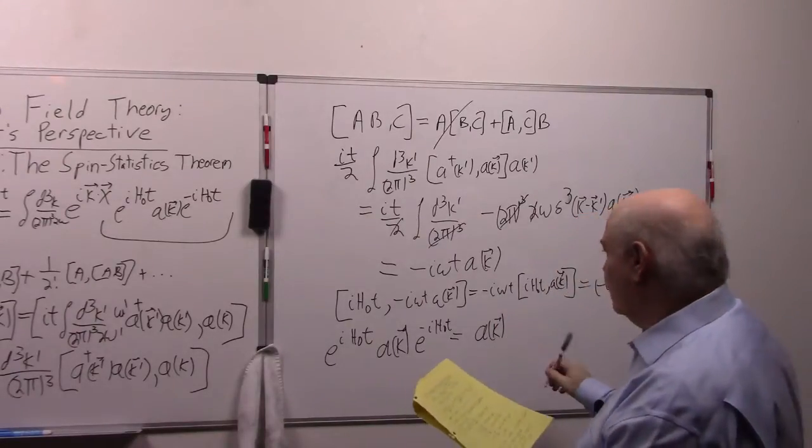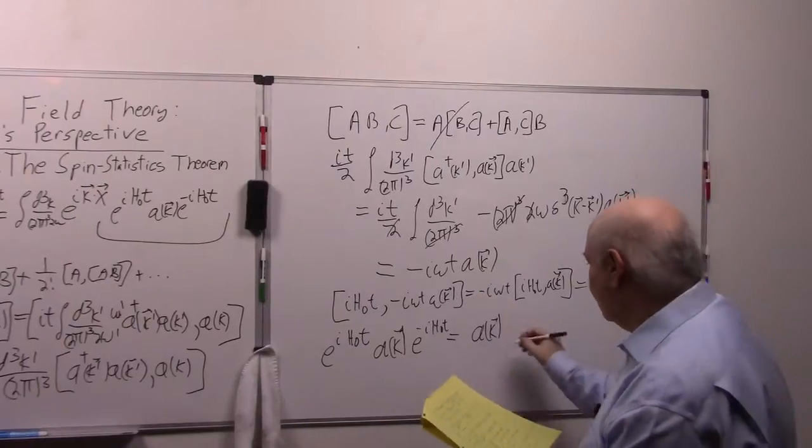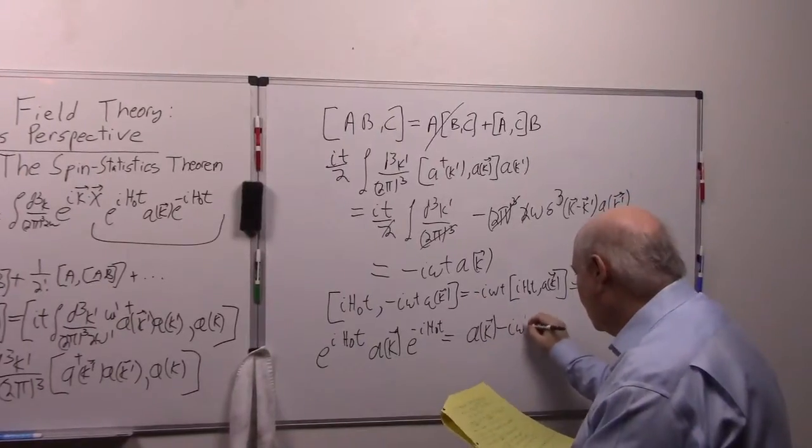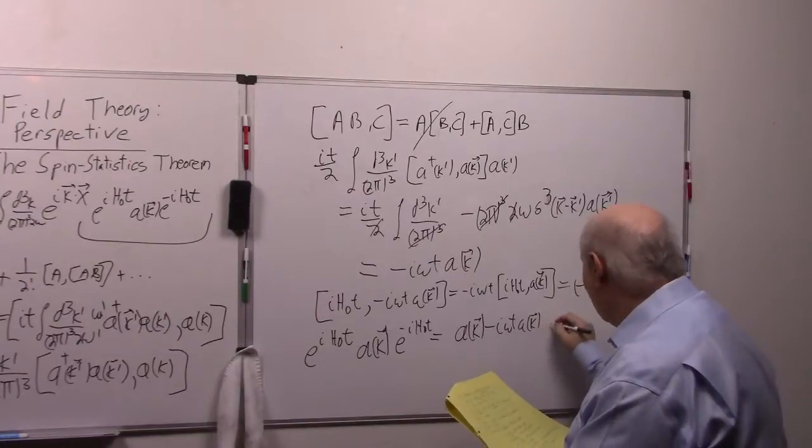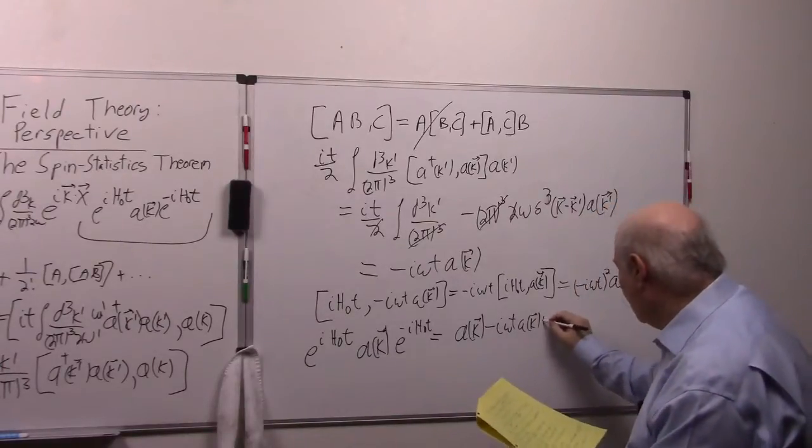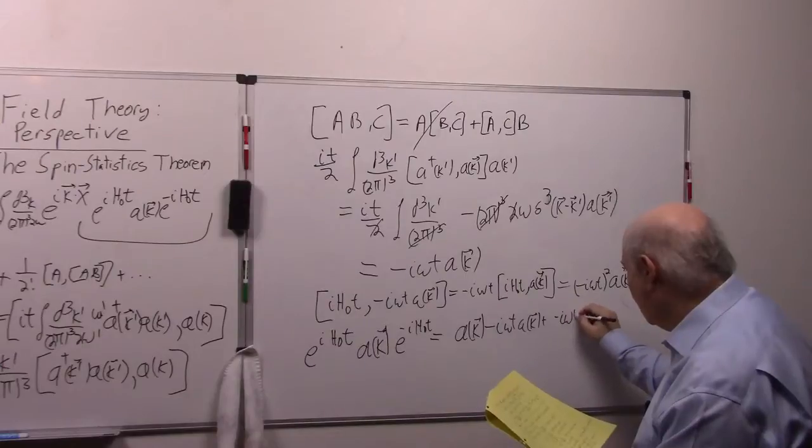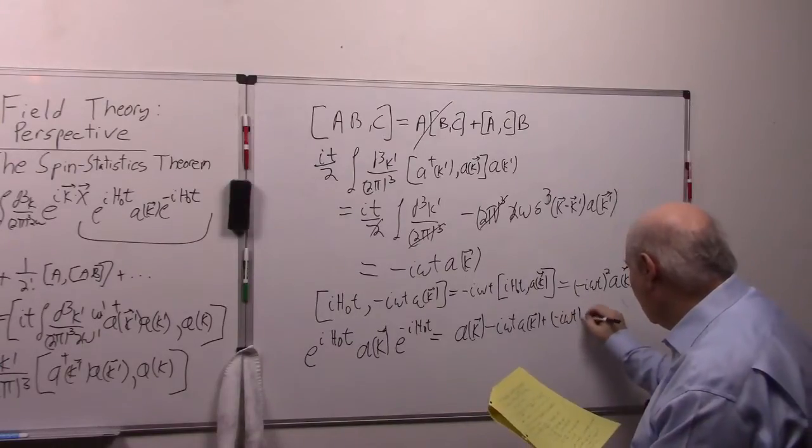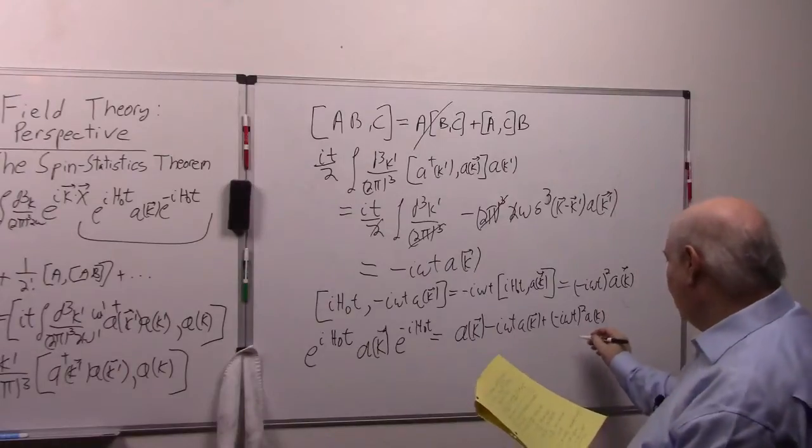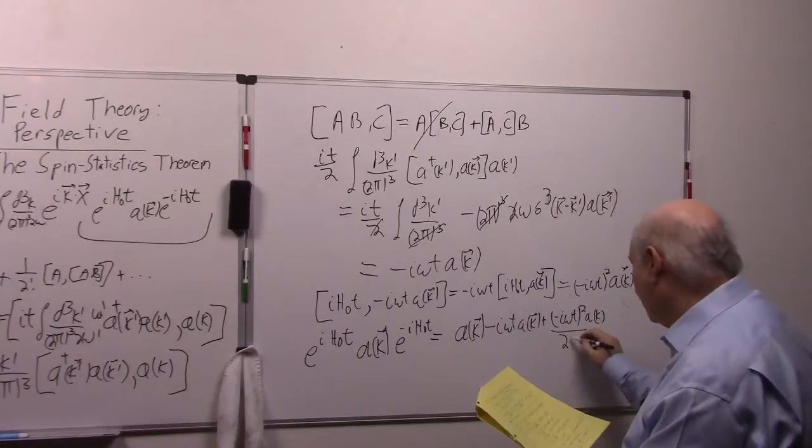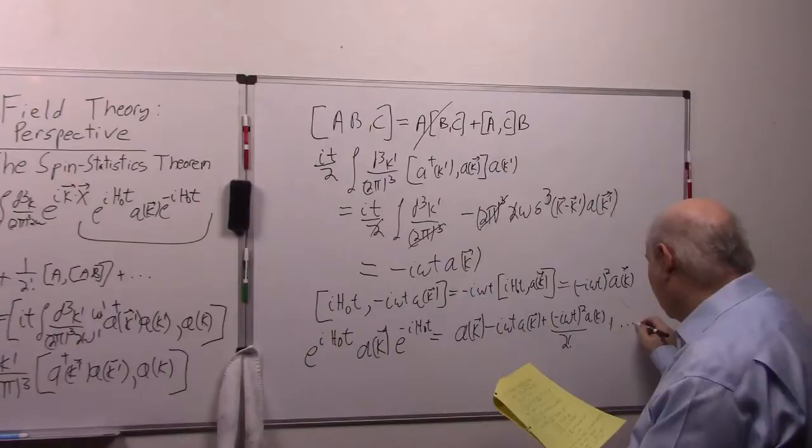It's going to be equal to B which is A(k). Then it's going to be equal to [A,B] which is this. And then we're going to have this. And this one's over two factorial. Plus dot dot dot.